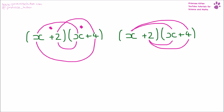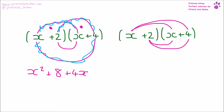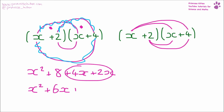Right, so working out the answers. Let's do this line first. That is going to give us x squared. Cross off the line, then we get plus 8x. Cross off the line, then we get plus 4x. And then the middle gives us plus 2x. The order that examiners like this written is x squared plus 6x plus 8.